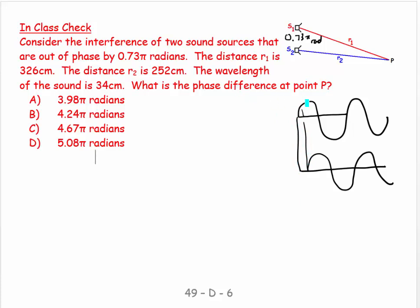The distance between r₁ and the receiver at P is 326 centimeters. The distance between r₂ and the receiver is 252 centimeters, and the wavelength is 34 centimeters. What's the phase difference at point P?